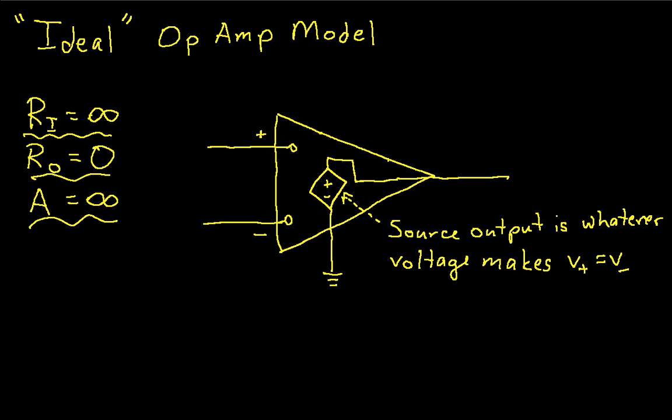Okay, so this might lead you to believe that this is a dumb thing to do. If I make the gain infinite, then if the difference between the inputs is anything but zero, then the output is going to be infinite, and we don't want that. We can't use that in real life.